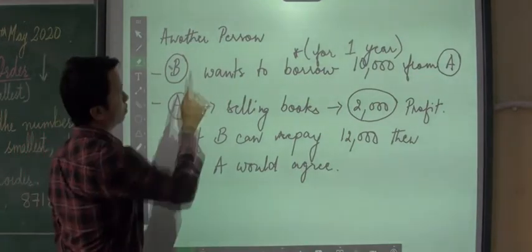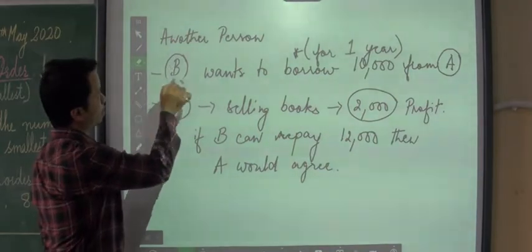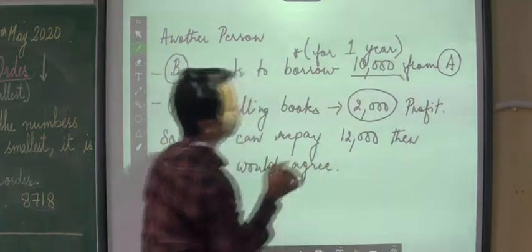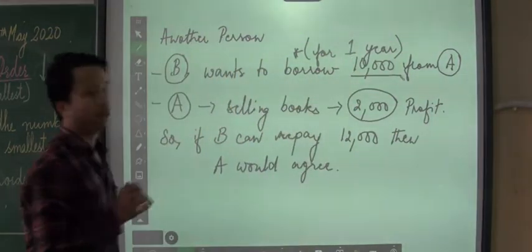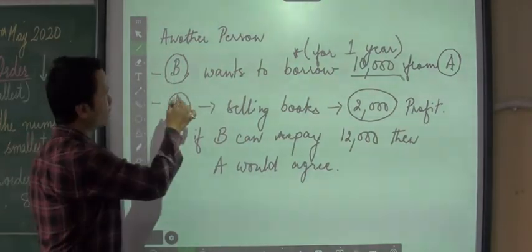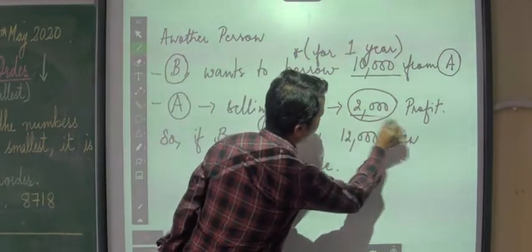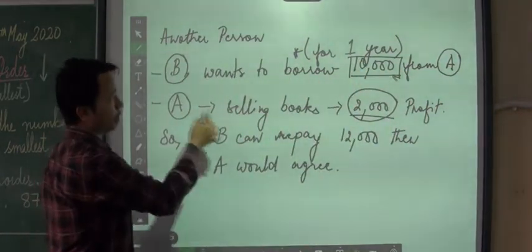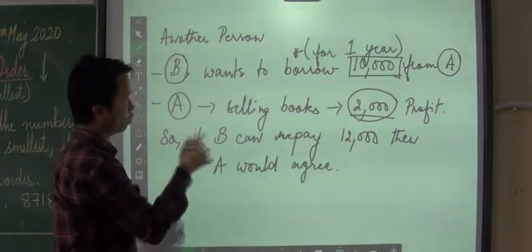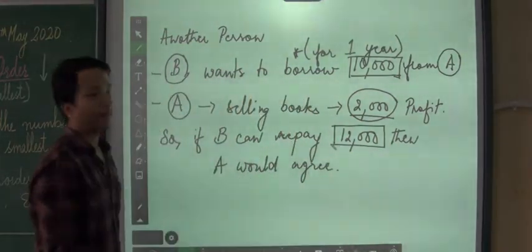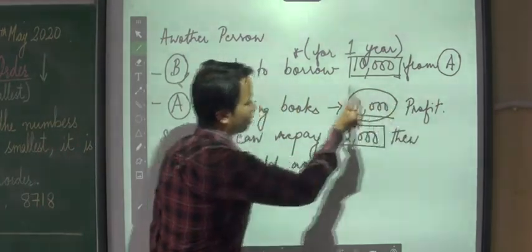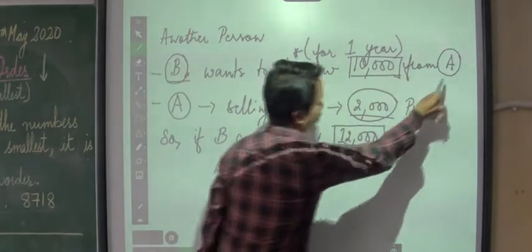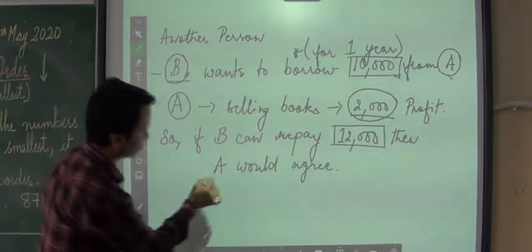Now let's say there is another person, a friend of businessman A, named B. He wants to borrow ten thousand rupees from A for a period of one year. Before lending, A will think: if he had invested the money in buying books, he would earn a profit of two thousand rupees. So A would not simply give ten thousand rupees to B. If B can repay twelve thousand — that is, ten thousand borrowed plus two thousand extra — then only A would agree to lend it.